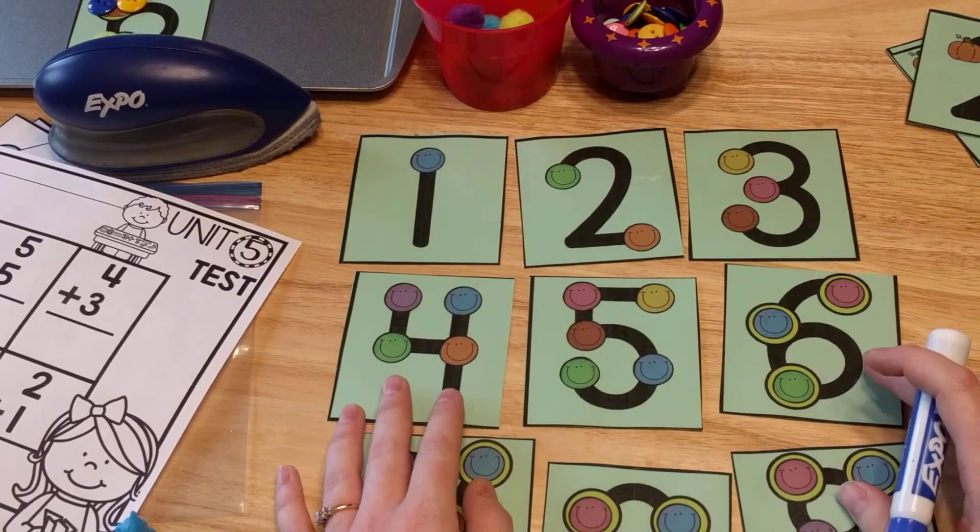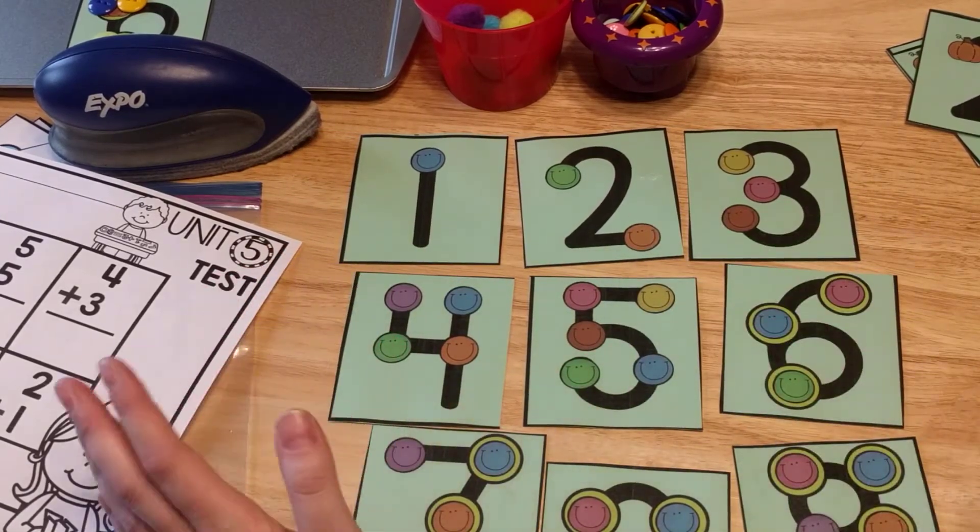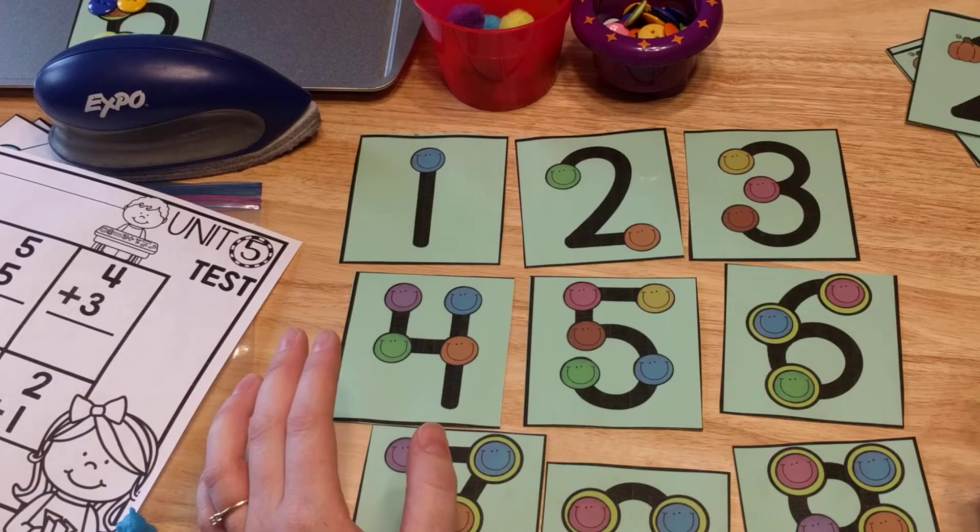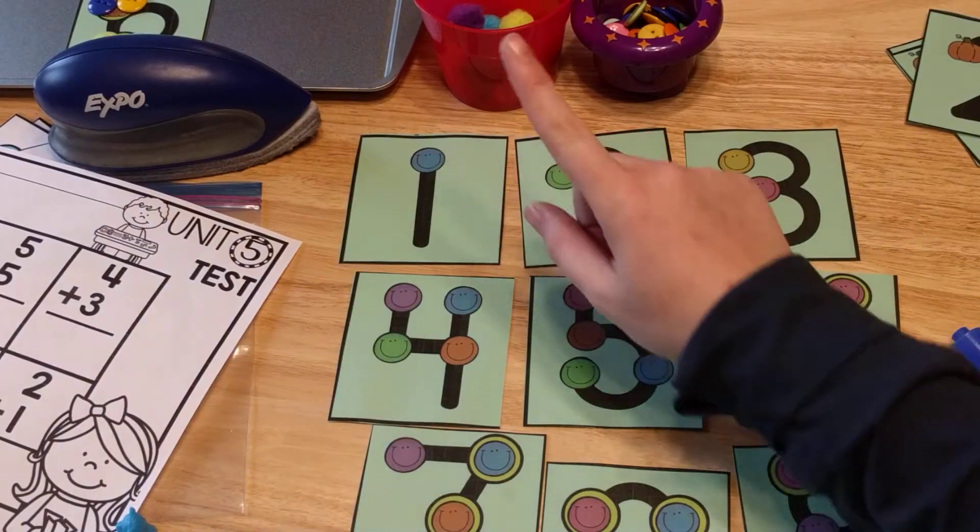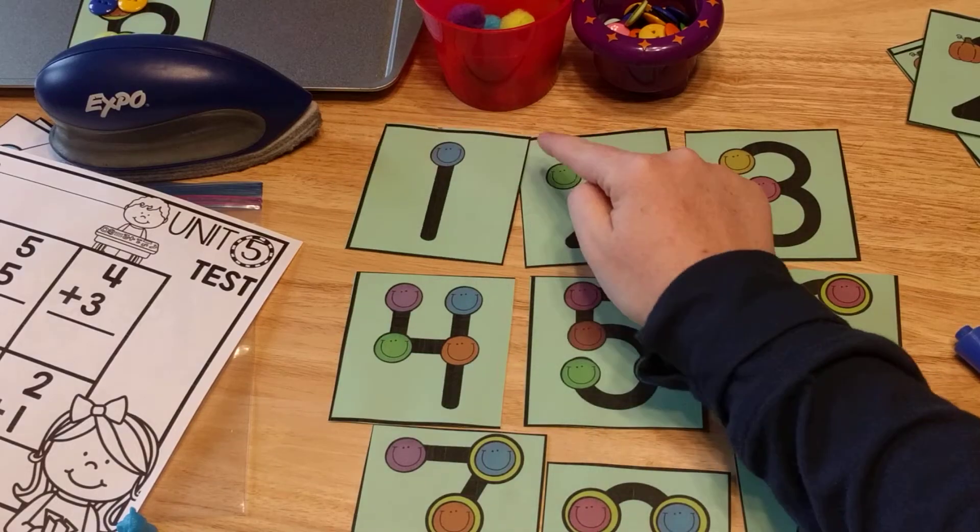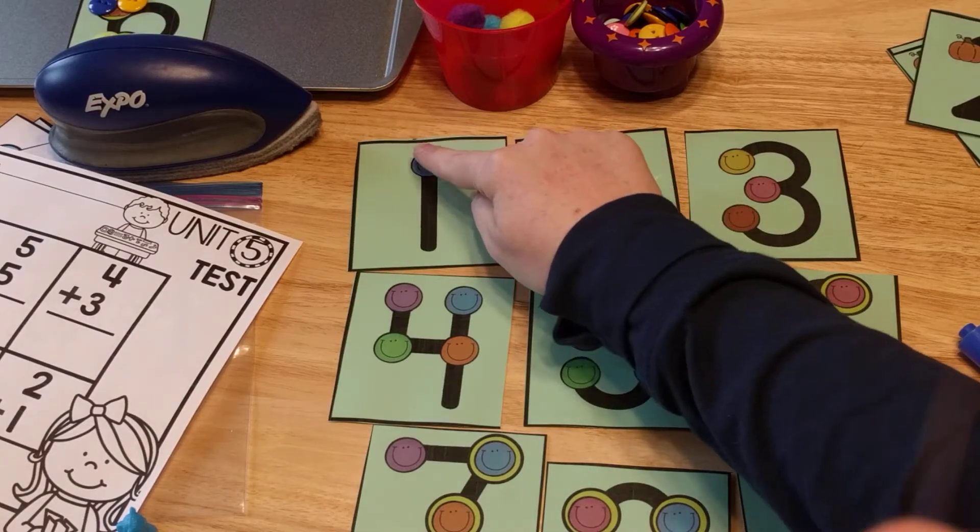So pretty much what it is, is each of these numbers has a dot on them that represents the number. So for this one, this is a number one, and you teach them to take their finger and to touch it. It's the touchpoint while they count. So one.